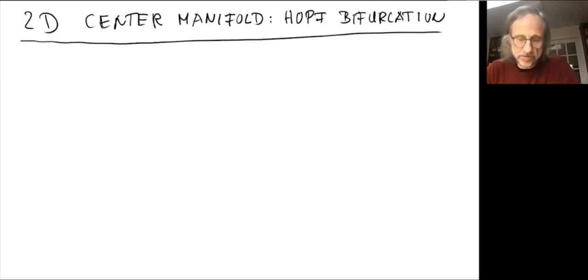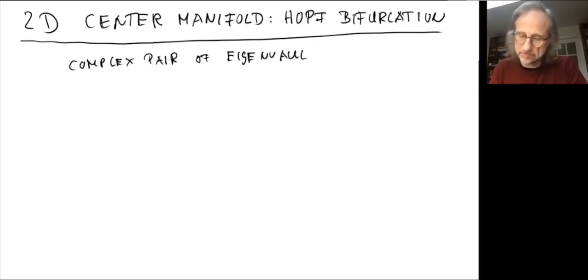So let's first look at oscillations with a complex pair of eigenvalues, in which case there will be a two-dimensional center manifold. We get a 2D central manifold.